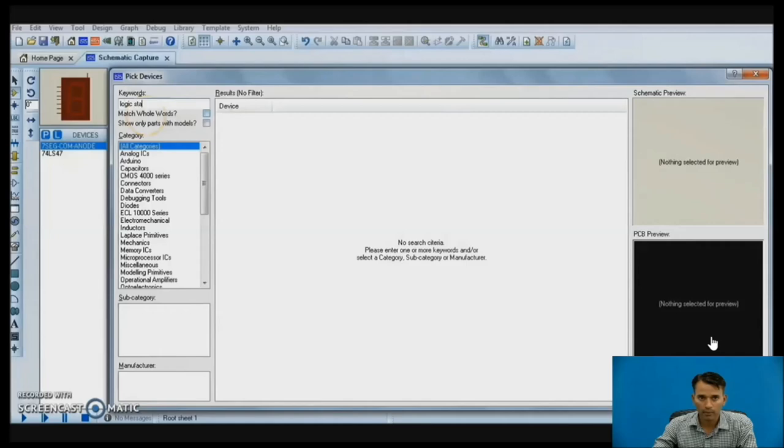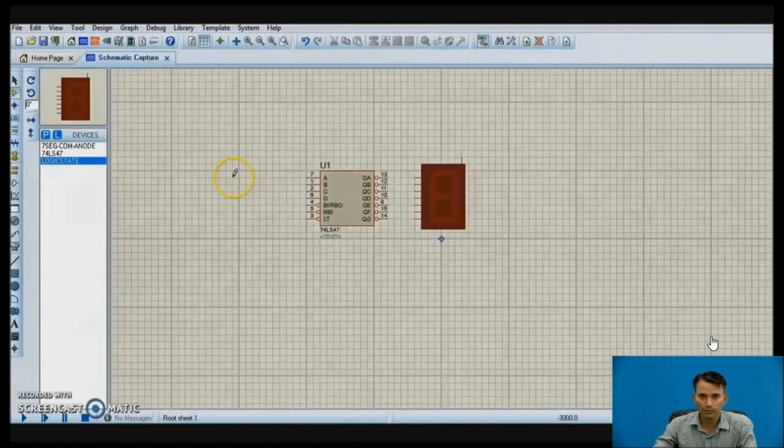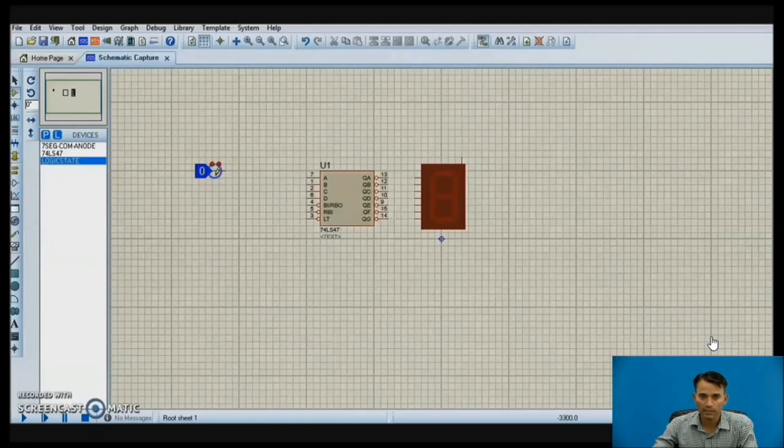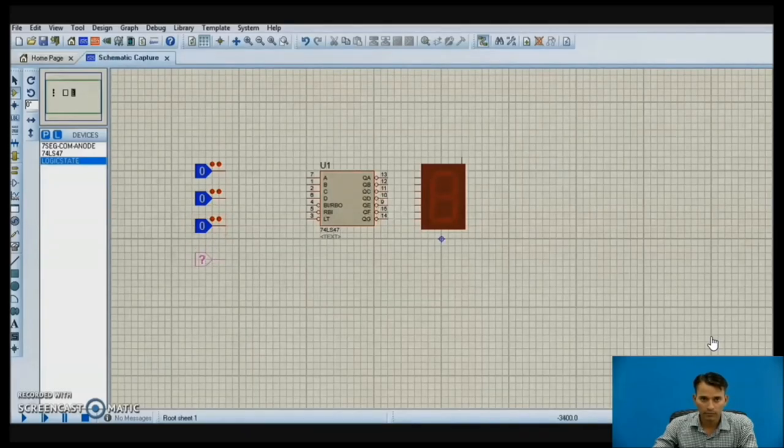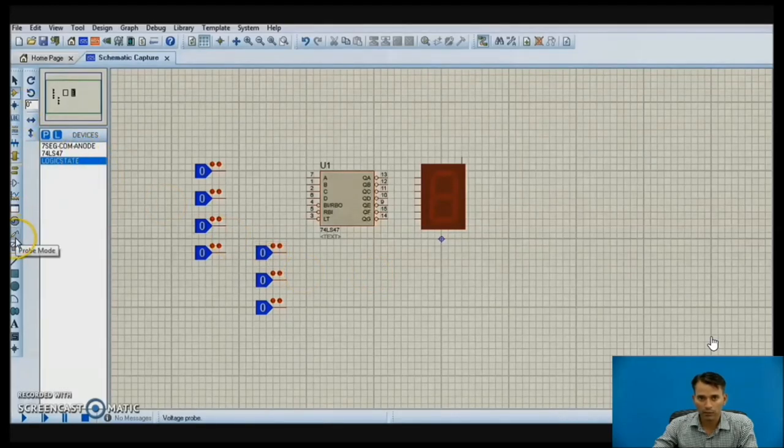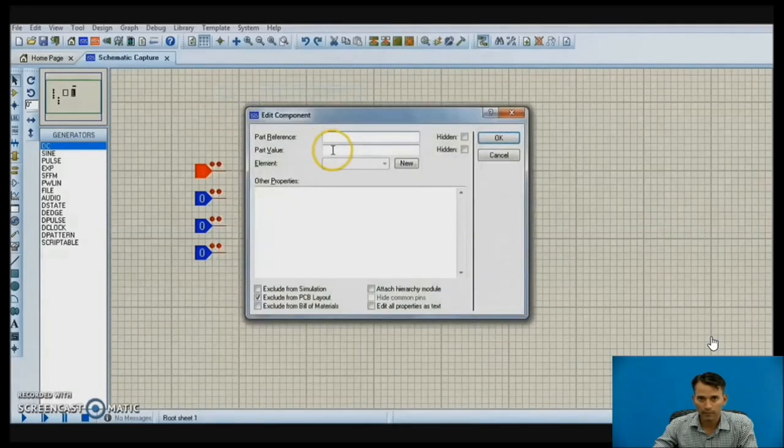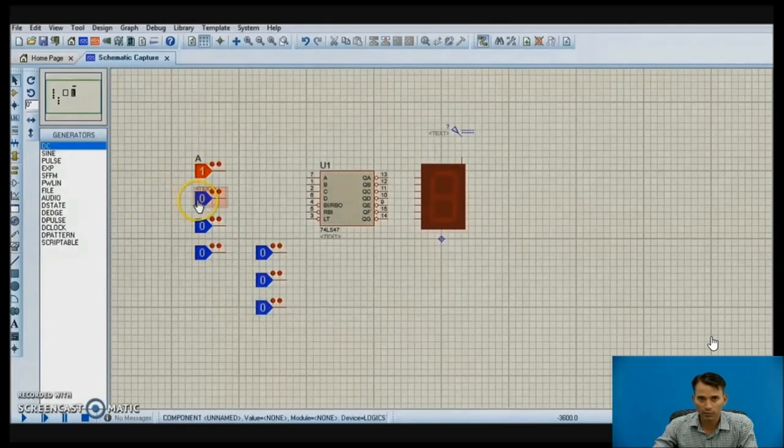Then we require logic states as we have to give 4 inputs ABCD. So we require 4 logic state inputs for ABCD, placing them at proper positions. We require 3 more logic state inputs which are for control inputs. As we have already discussed, we have 3 control inputs as LT, RBI, and RBO. We require plus 5V supply. Let us give names to all these logic state inputs ABCD.